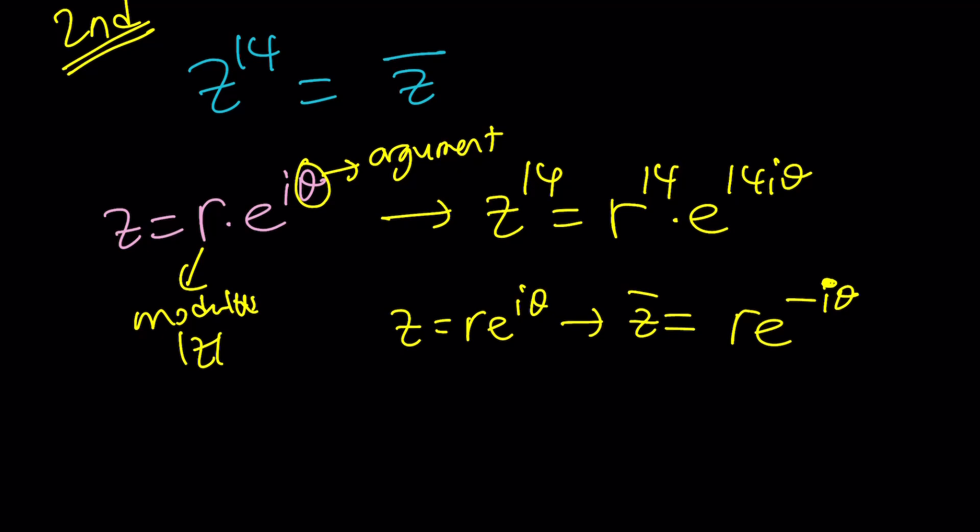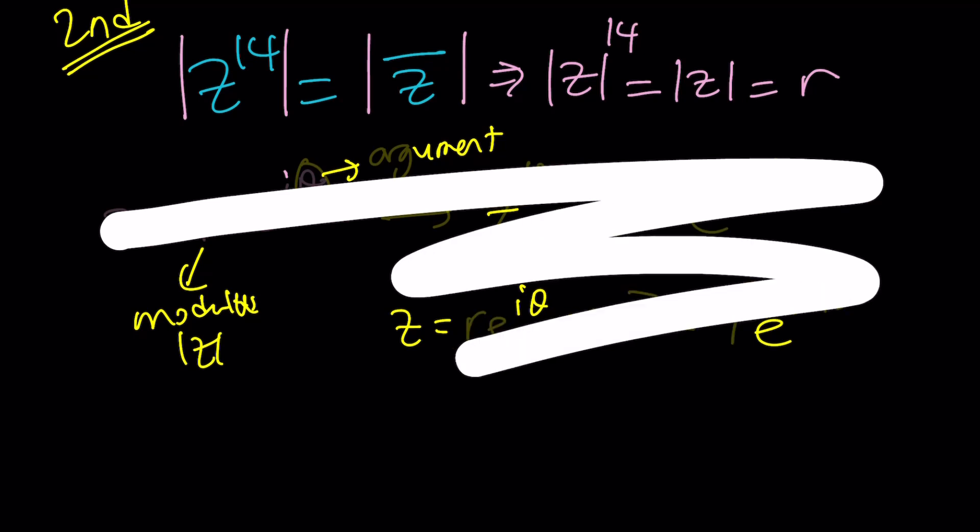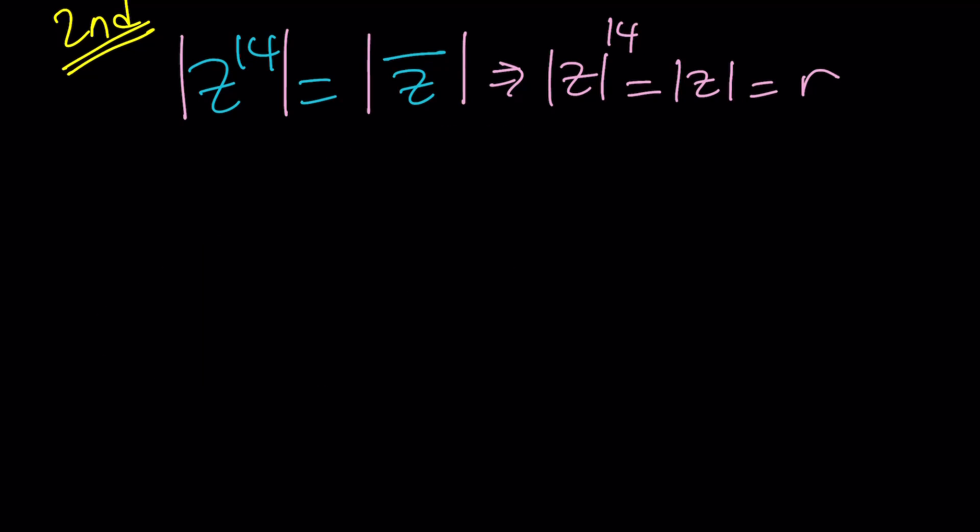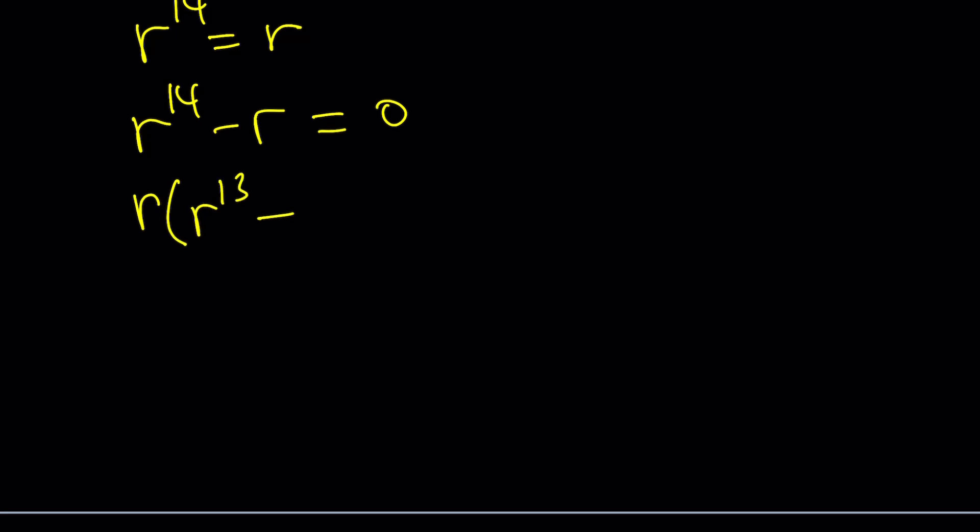Let's go ahead and absolute value both sides. The absolute value of Z to the 14th can actually be written as the absolute value of Z to the power 14th. So, the power can go out. And the bar doesn't really change anything. It's going to be the same thing as absolute value of Z. Let's go ahead and call this R. If you do the math, this is R, but at the same time, it's R to the power 14. R to the 14 equals R. R to the 14 minus R equals 0. Take the R outside, R times R to the 13 minus 1 equals 0.